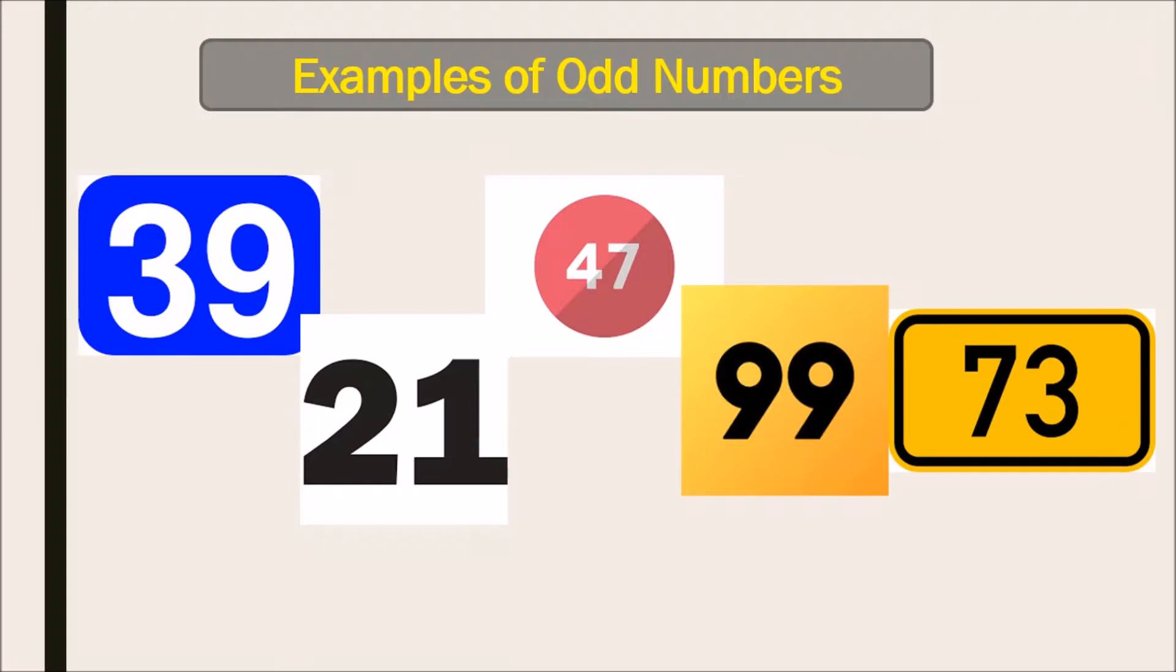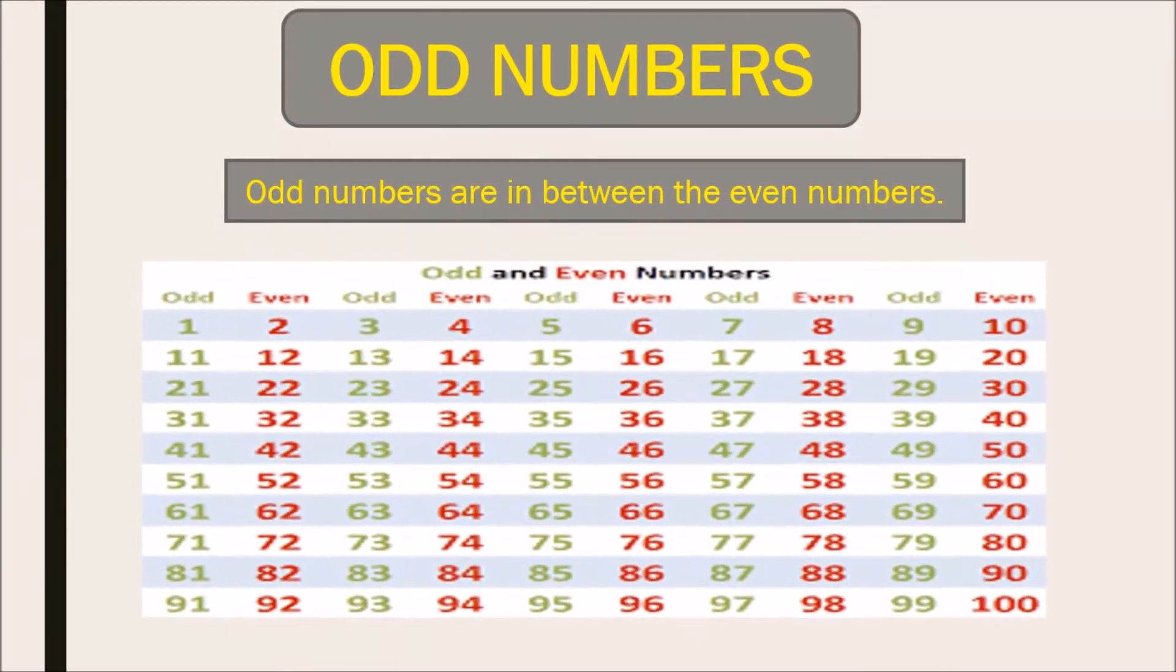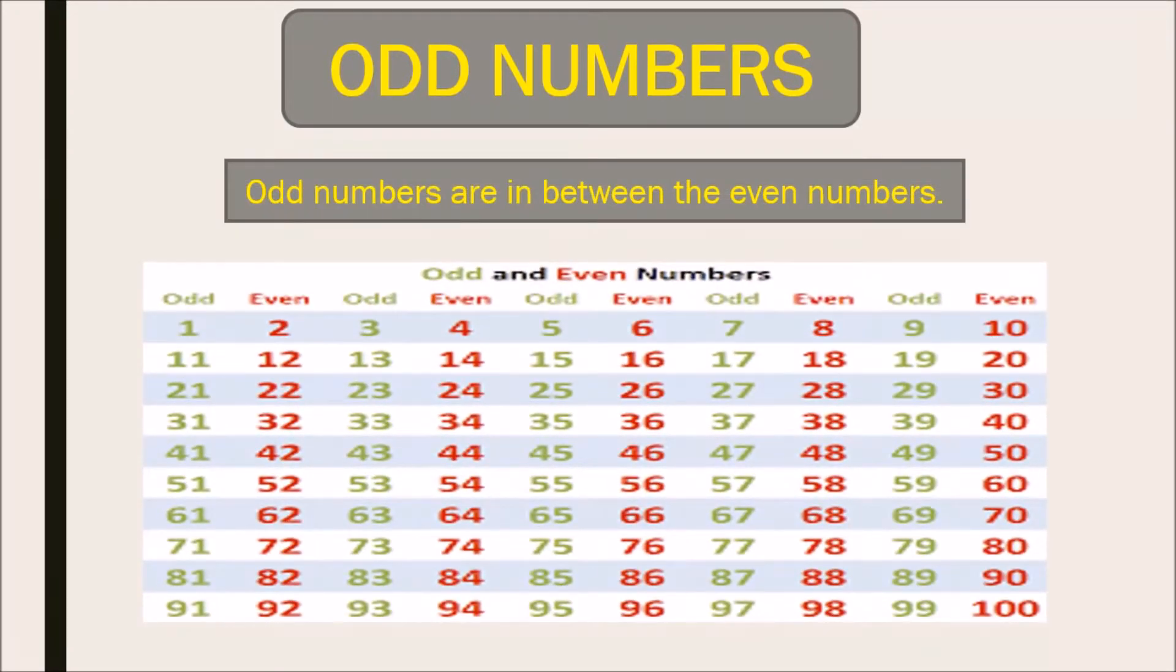Now if we write numbers from one to one hundred, then we can see odd numbers always come between the even numbers. Green is the odd numbers and red is the even numbers. You can see odd numbers are always between the even numbers.